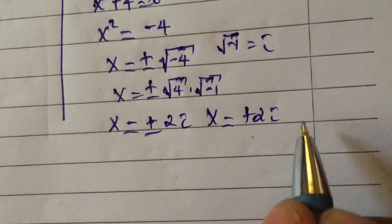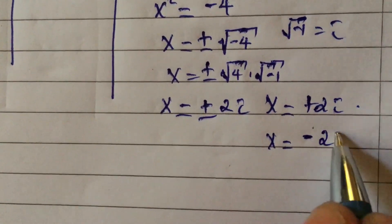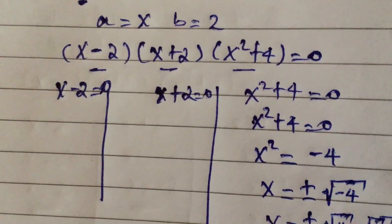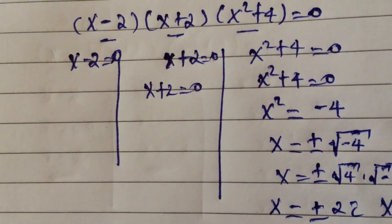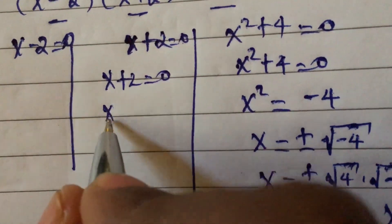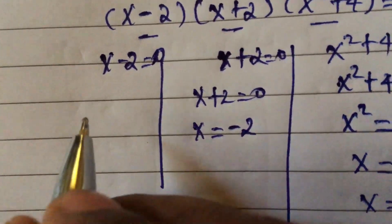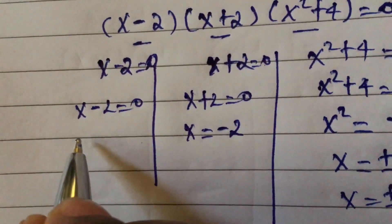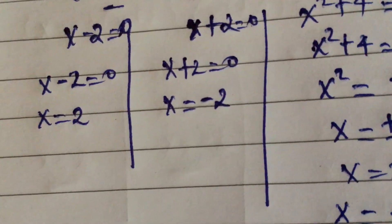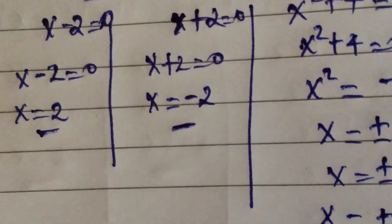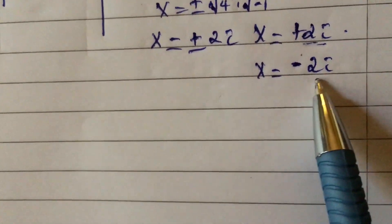So x equals positive 2i or x equals negative 2i. For case two: x plus 2 equal to 0, so x equals minus 2. For case three: x minus 2 equal to 0, so x equals positive 2. Therefore the four roots of the equation are x equal to 2, x equal to minus 2, x equal to 2i, and x equal to minus 2i.